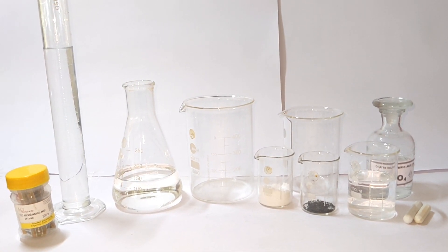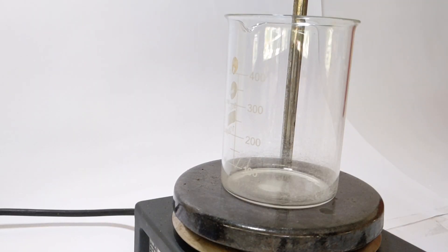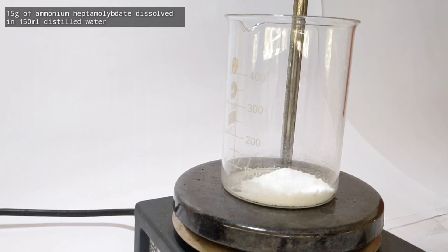A 500 milliliter beaker was placed on a hot plate stirrer and 15 grams of ammonium heptamolybdate was added. A stirring bar was then placed in the beaker and 150 milliliters of distilled water was added to it.